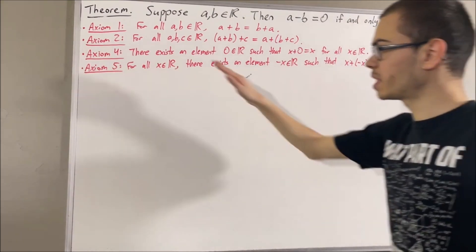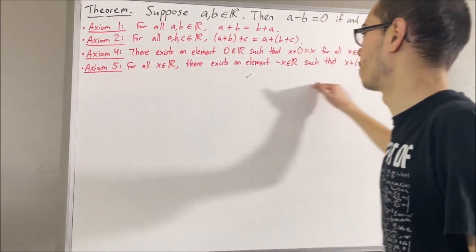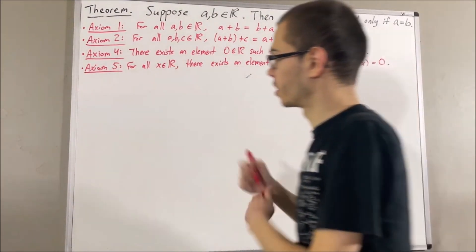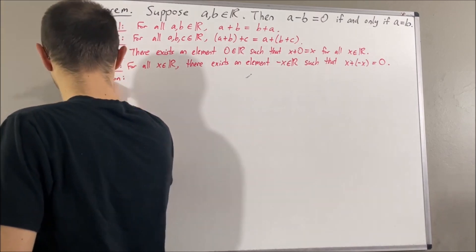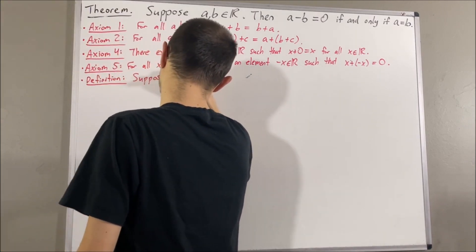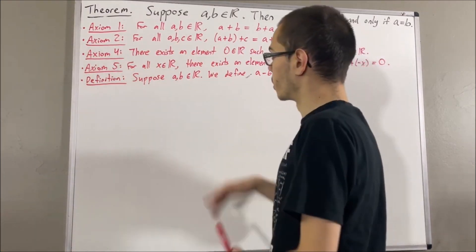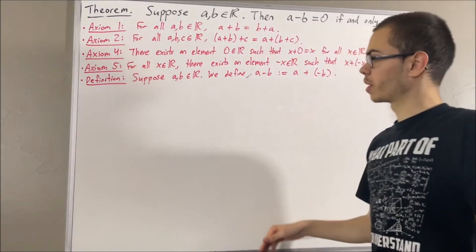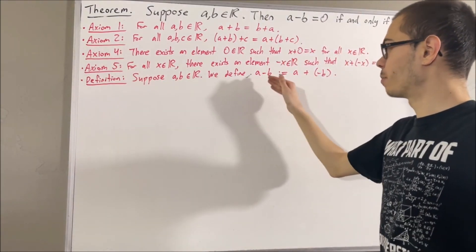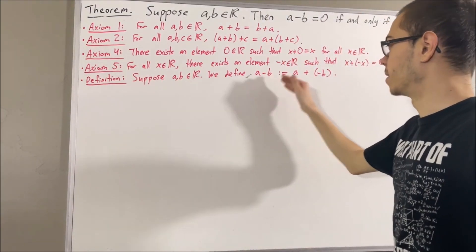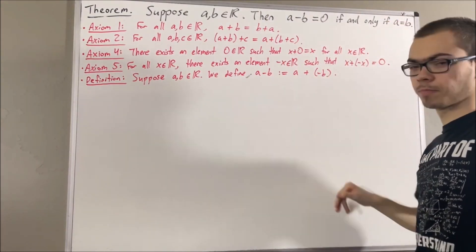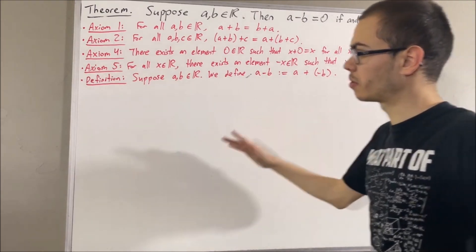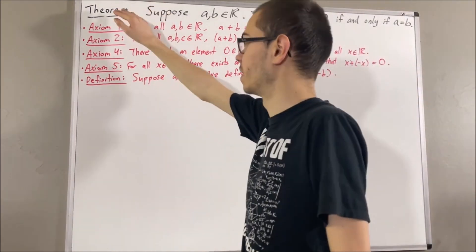Now, using axiom 5, our definition of subtraction is as follows. Suppose a and b are real numbers. We define a minus b to be a plus the negative of b. Okay, so now let's get into proving this theorem.